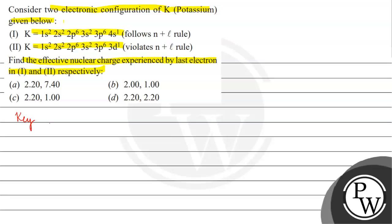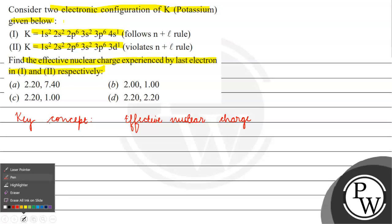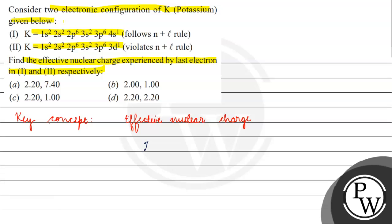The key concept for this question is effective nuclear charge. Effective nuclear charge is basically equal to nuclear charge minus the shielding constant. Now we have to calculate the value of the shielding constant.